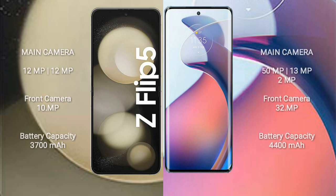The Samsung Galaxy Z Flip 5 has a rear triple camera setup of 12MP, 12MP, and 12MP, with a 10MP front camera. The Motorola Moto S30 Pro has a rear triple camera setup of 15MP, 13MP, and 12MP, with a 32MP front camera.